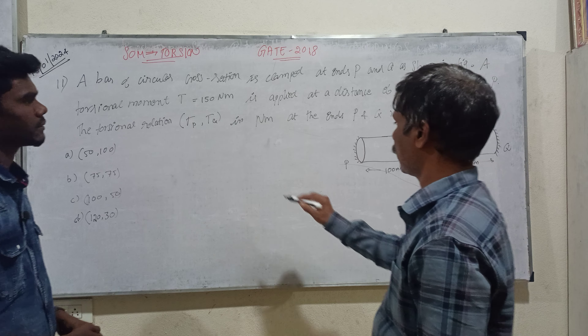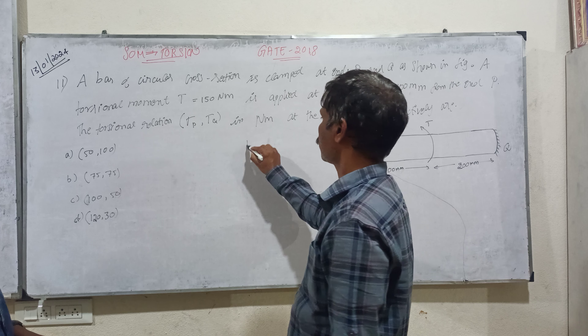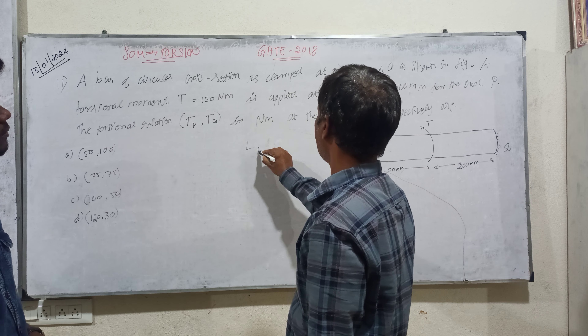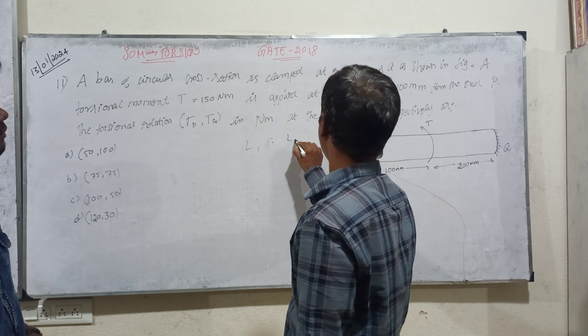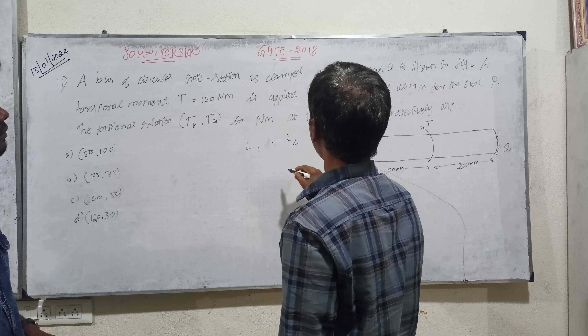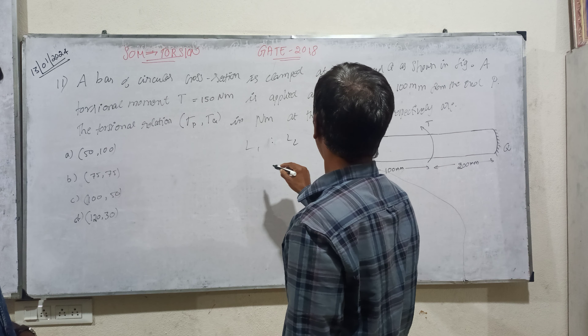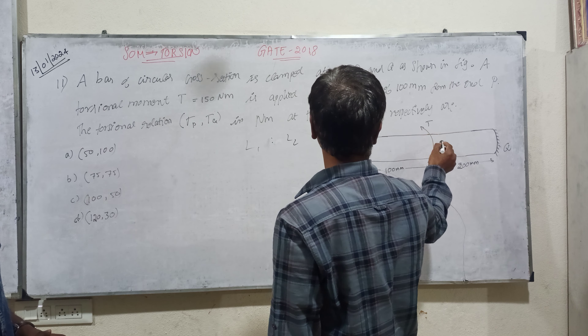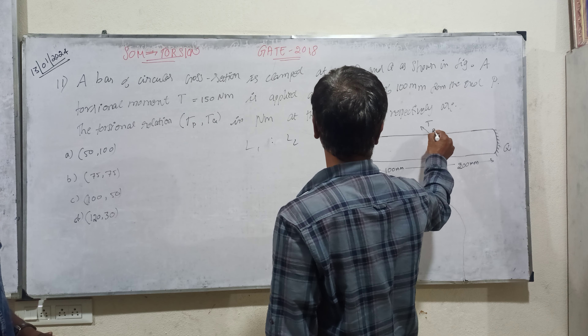This is a super hard problem. The L1 to L2 ratio — if PQ is the bar, this segment is R and this segment is R.